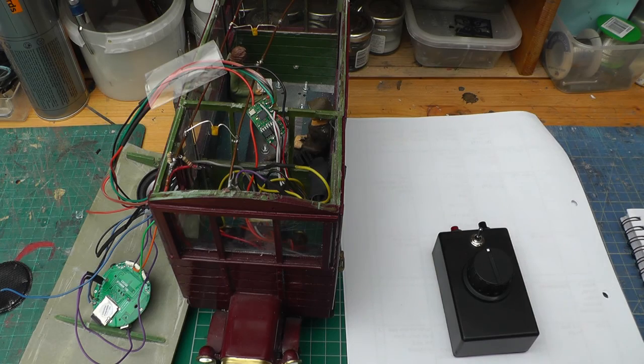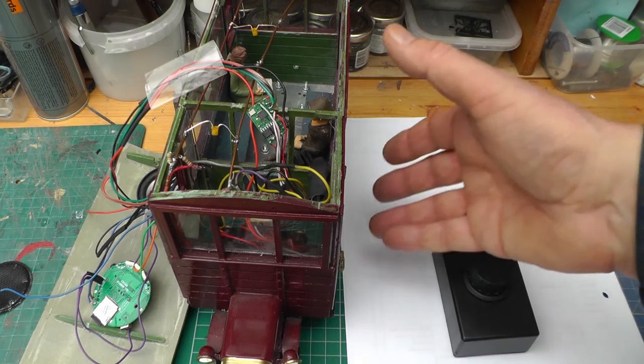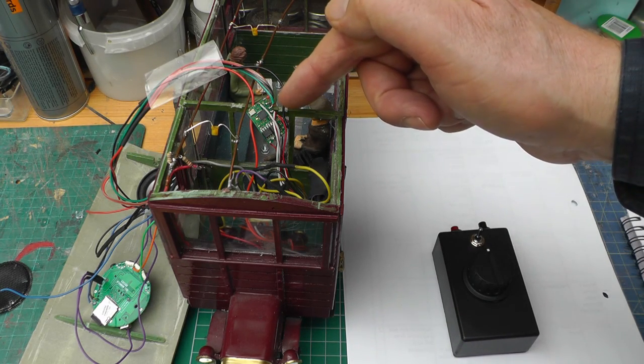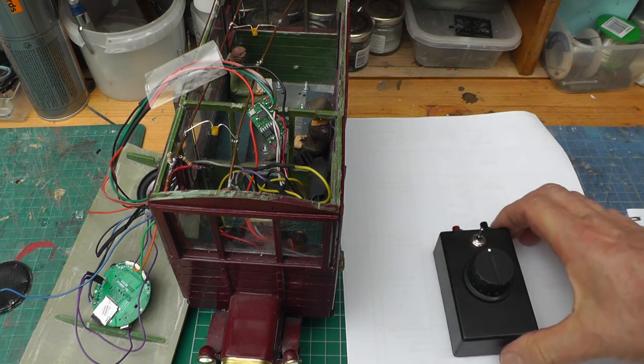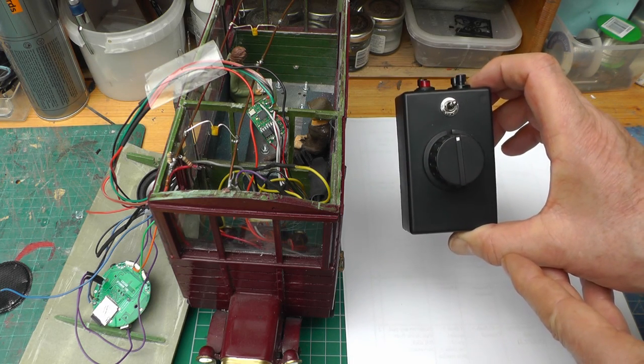Here we see my Ford rail motor which was kitbashed from an Andel coach with my own chassis. It's controlled by a Deltang RX61B receiver controller, which in turn is bound to my TX20 transmitter.